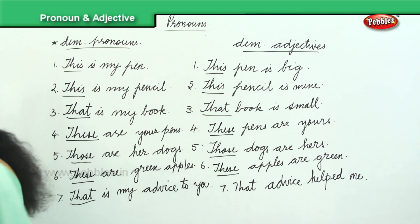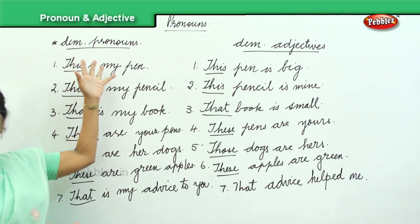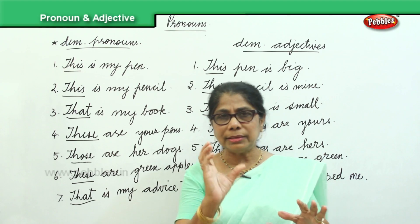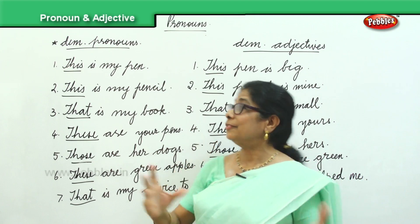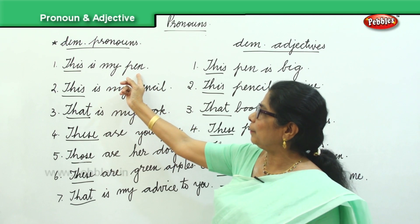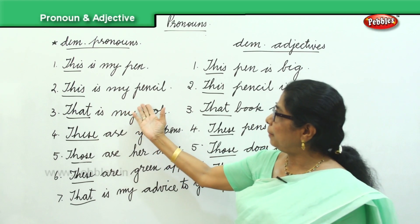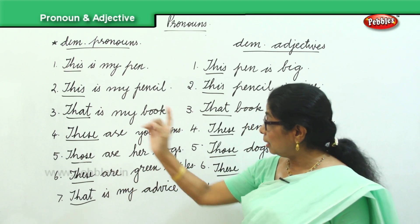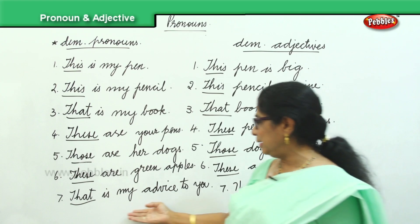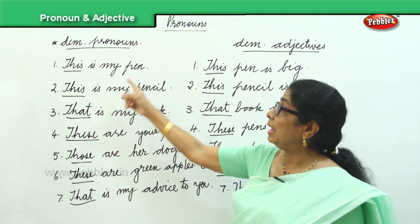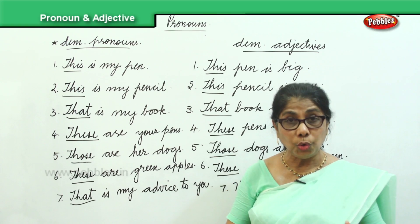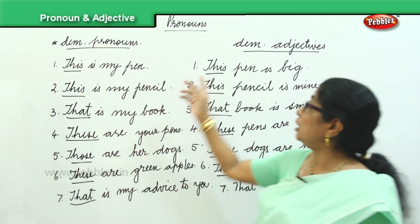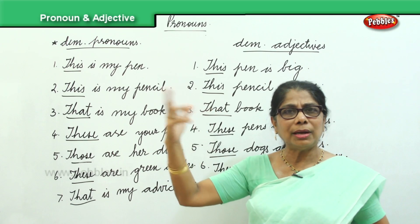Now look at all these sentences. We are looking at demonstrative pronoun versus demonstrative adjective. The pronouns are: 'This is my pen,' 'This is my pencil,' 'That is my book,' 'These are your pens,' 'Those are her dogs,' 'These are green apples,' 'That is my advice to you.' When you look at demonstrative adjective, 'This is my pen' changes to 'This pen is big or small or hers or yours.'